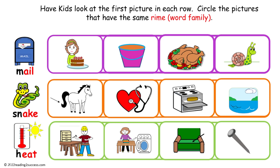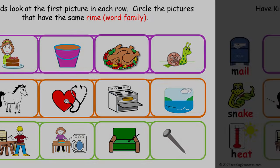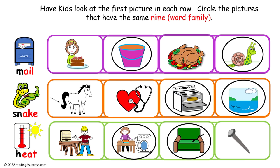Have kids look at the first picture in each row, then have them circle the pictures that have the same rhyme. The first picture in the first row is 'male,' and the choices are cake, pail, meat, and snail. The second row starts with 'snake,' with choices tail, beat, bake, and lake. The third row starts with 'heat,' with choices make, neat, seat, and nail. Pale and snail are circled because they share the rhyme as 'male.' Bake and lake are circled for 'snake.' Neat and seat are circled for 'heat.'